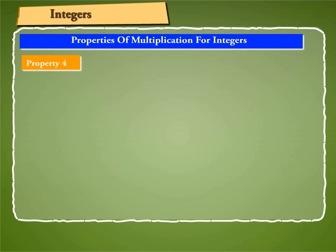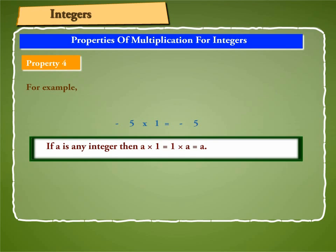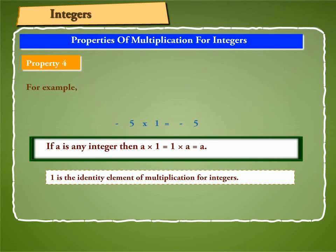Property 4: Let us examine the product of two integers, one of which is 1. For example, minus 5 into 1 is equal to minus 5. Thus, we find that the product of any integer and 1 is always that integer. Hence, if A is any integer, then A into 1 is equal to 1 into A is equal to A. 1 is the identity element of multiplication for integers.